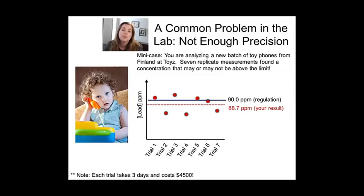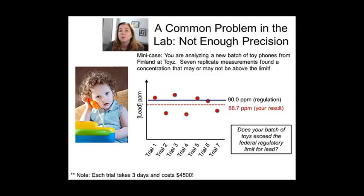And the problem is that the average of your values is almost identical to the regulatory value. And in fact, if you took the standard deviation and you apply the 95% confidence limit test we talked about in the first week, you actually couldn't tell me if your toy phones have more than 90 ppm lead or less.